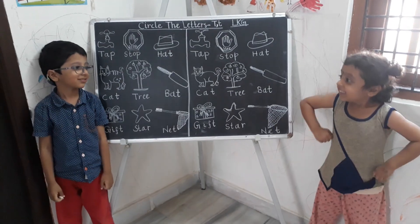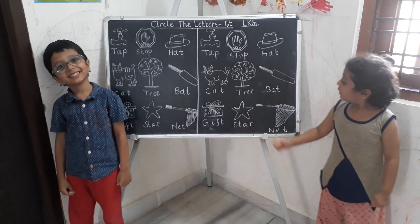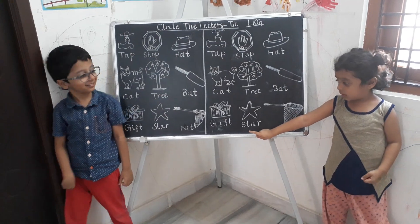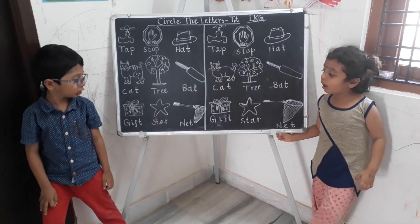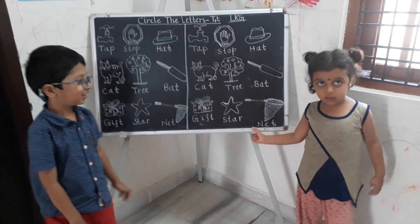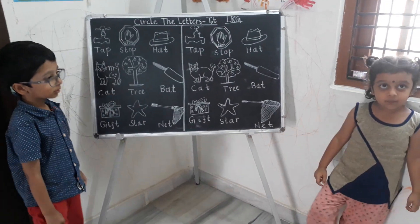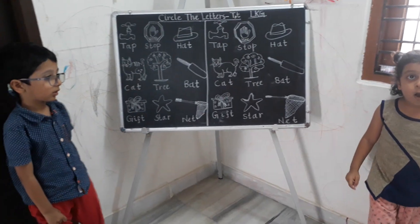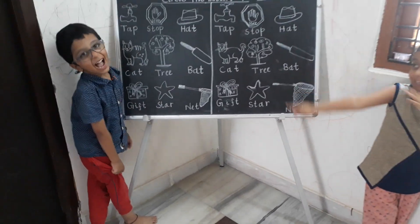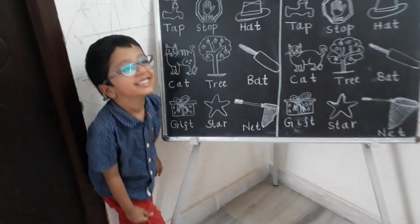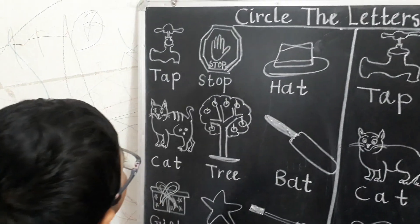So what are we doing here? Circle the letters T — capital T, small t. What are we circling? Capital T and small t. So who is going to go first? Adarsh. Come on Adarsh — capital T and small t, we are going to circle now.